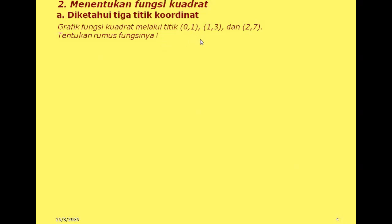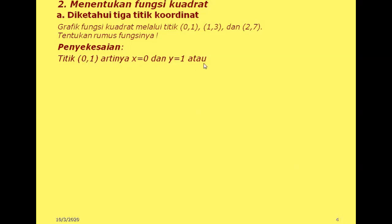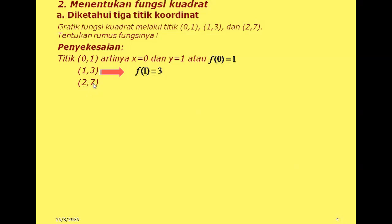Bagaimana cara menentukan rumus fungsinya kalau diketahui 3 titik seperti ini? Perhatikan penyelesaiannya. Titik pertama (0,1): x-nya 0, y-nya adalah 1. Bisa dituliskan dalam bentuk fungsi f(0) sama dengan 1. Titik (1,3): x-nya 1, y-nya adalah 3, sehingga menjadi f(1) sama dengan 3. Titik yang ketiga, (2,7): x-nya 2, y-nya 7, sehingga bisa menjadi f(2) sama dengan 7.